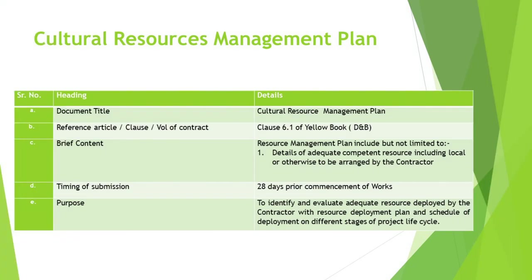We now focus on a document that intertwines the construction process with the tapestry of human heritage: the Cultural Resources Management Plan. Enshrined in Clause 6.1 of the Yellow Book for Design and Build Contracts, this plan is a comprehensive approach to safeguarding cultural heritage and ensuring that construction activities do not inadvertently harm or destroy valuable cultural resources. The plan must detail the competent resources available, including local expertise or arrangements made by the contractor, ensuring that those who understand the cultural significance of the area are involved in its care.